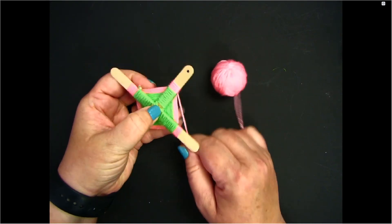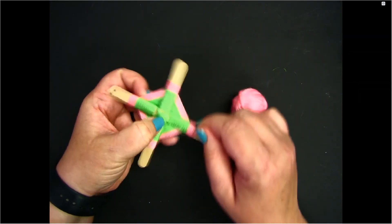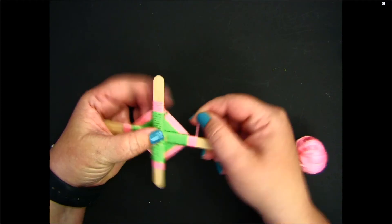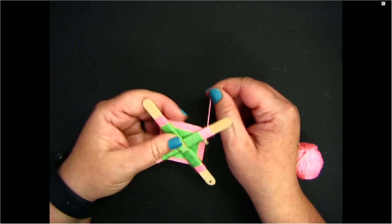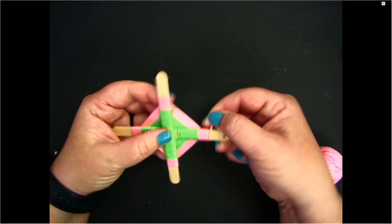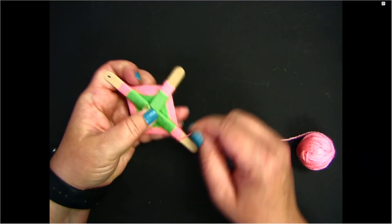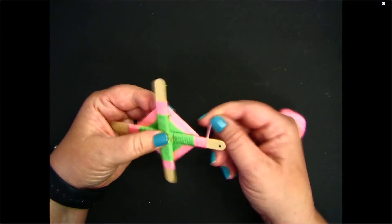You can make your God's Eye as big as you would like. To make it larger, just keep going with the same pattern. However, do not get too close to the edges of your popsicle sticks, or your pattern could come unraveled.